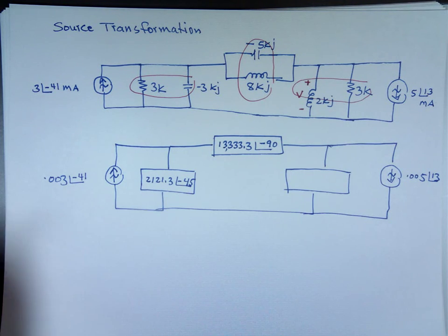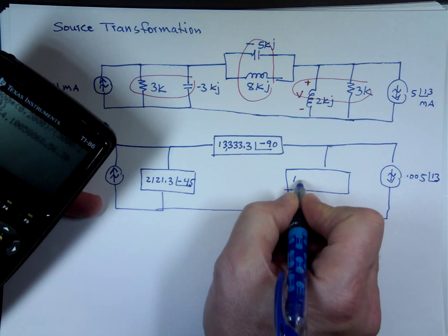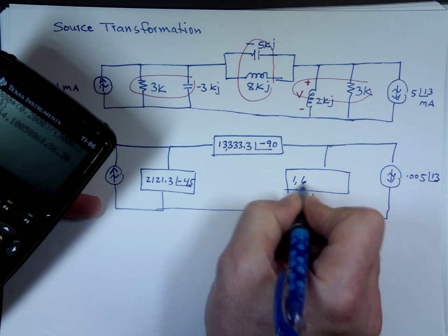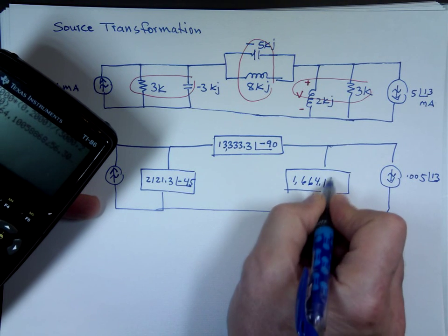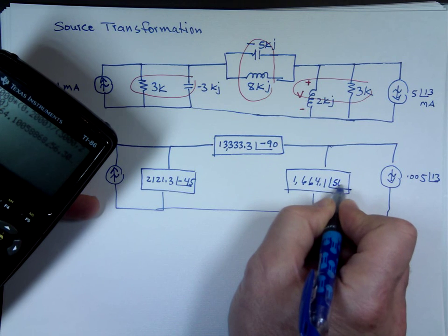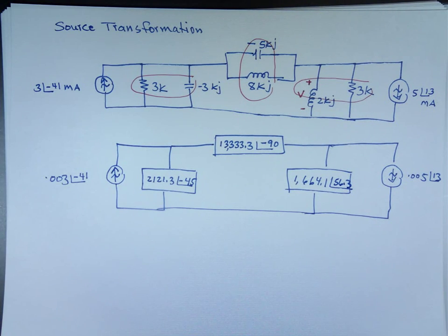This one, the product over the sum, 3,000 times 0 comma 2,000 divided by 3,000 comma 2,000. 1,664.1 angle 56.3, and this is V right here.